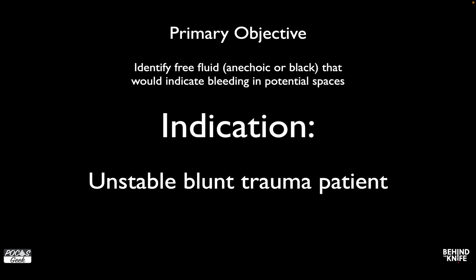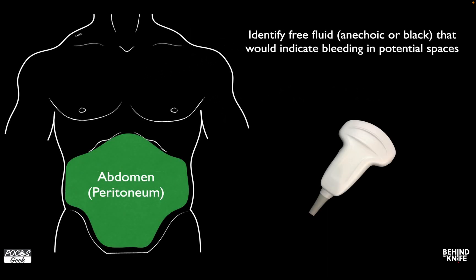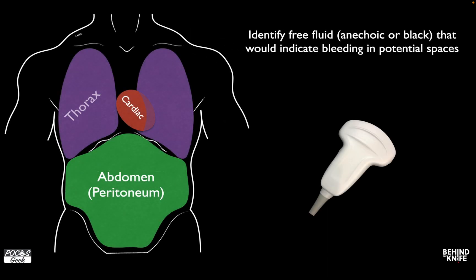This is primarily indicated in the blunt trauma patient that's unstable, and we're going to be looking at three areas of the body: the abdomen, the heart, and the lungs. We're going to use the curvilinear probe or a microconvex probe. This is the best probe for this because it gives us a big enough footprint to see, and it also penetrates deep enough that we can see these areas of bleeding.